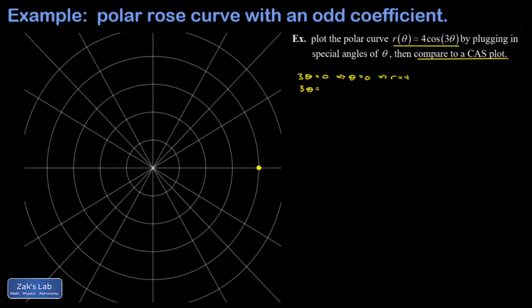The next angle that gives me a maximum magnitude for r is when 3θ = π. That means θ = π/3, and r is going to be four times the cosine of π, which is negative four because the cosine of π is negative one. For this one I aim at the angle π/3 but then I go backwards four steps, which puts me all the way down here.